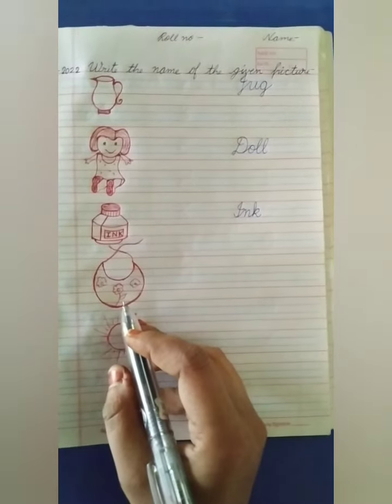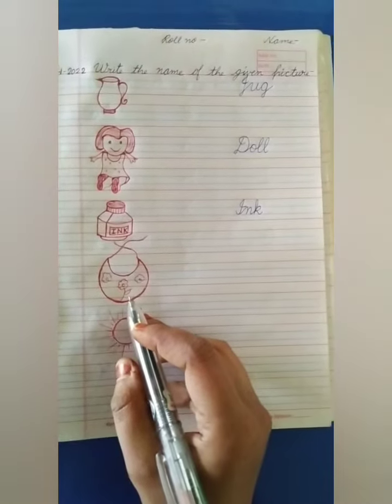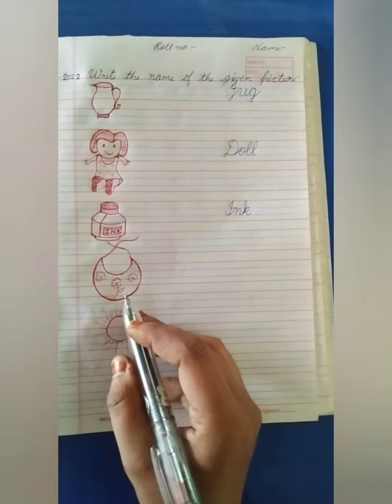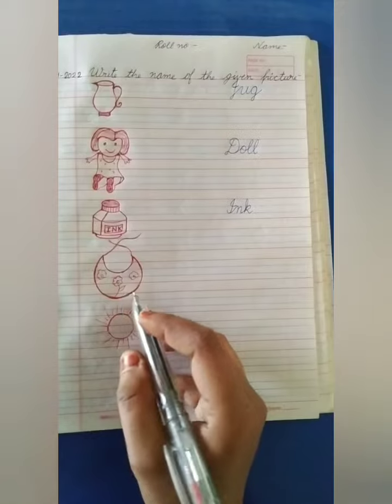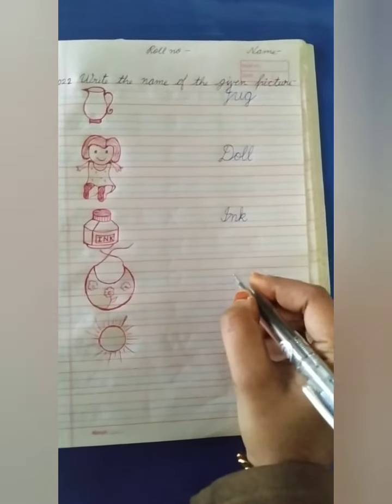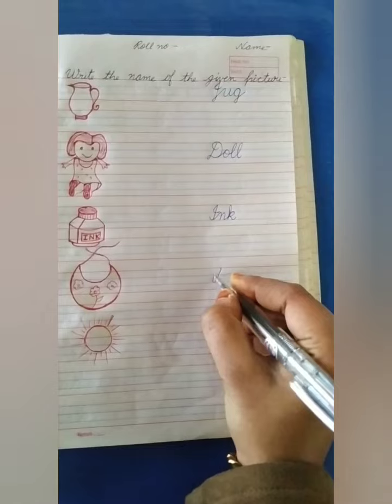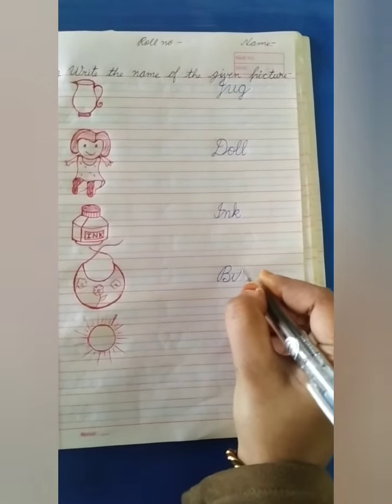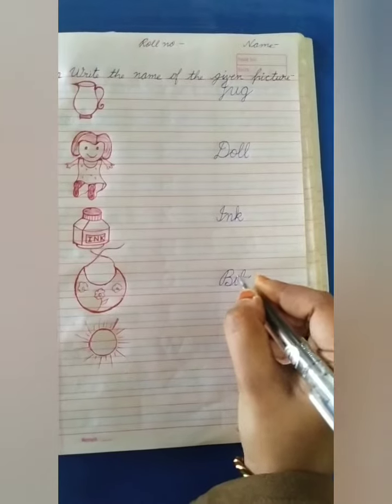Next one is bib. When small children eat food, this is worn by them so that their clothes don't get dirty. So, what is the name of this thing? Bib. B-I-B.